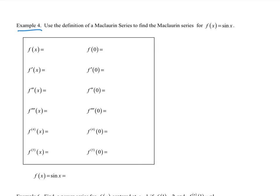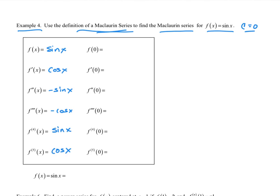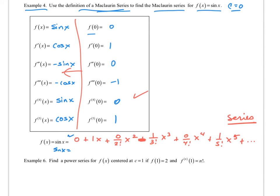Example four: use the definition of the Maclaurin series for f of x equals sine of x. Since it's Maclaurin, c equals zero. I take f of x equals sine of x and roll through each derivative, then find the value of each at zero. Writing it out and simplifying gives: x minus one over 3 factorial times x cubed, plus one over 5 factorial times x to the fifth, plus dot dot dot — continuing forever.